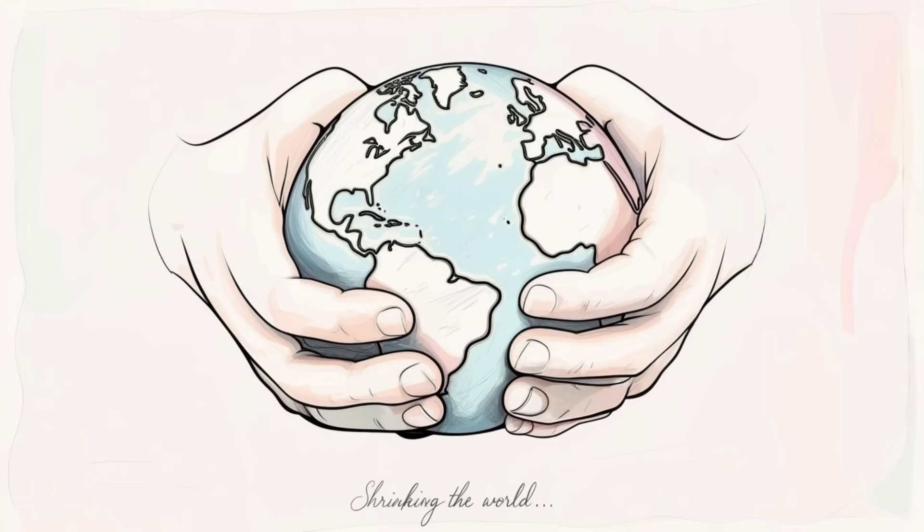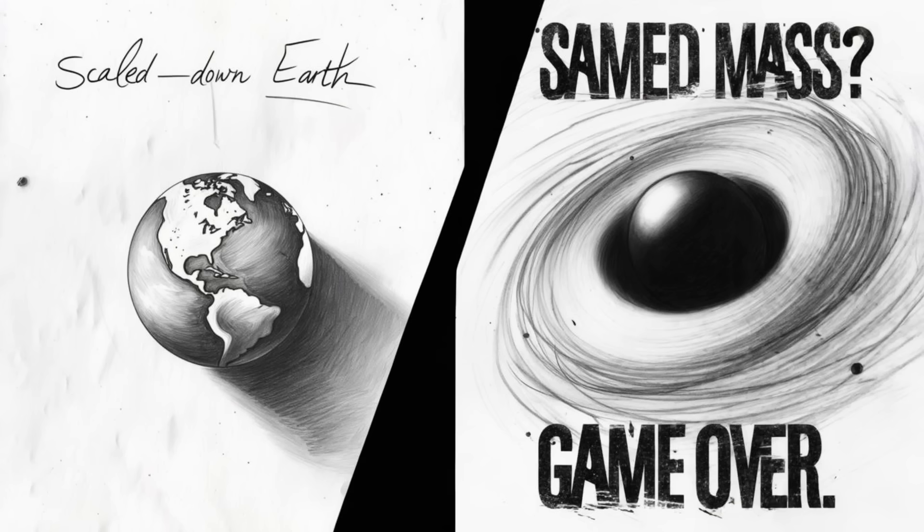So let's shrink our planet down and see what happens. First off, we have to establish the rules of this new mini-earth. When we say the earth is basketball size, do we mean it still has the same mass, just crammed into a smaller volume? That would make it a black hole, game over, sucked into the abyss.